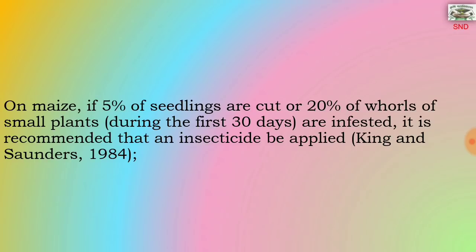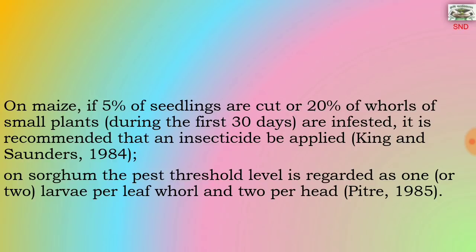On maize, if 5% of seedlings are cut or 20% of whorls of small plants during the first 30 days are infested, it is recommended that an insecticide be applied — this is the economic threshold level (ETL). On sorghum, the threshold level is regarded as 1 or 2 larvae per leaf whorl and 2 per head.